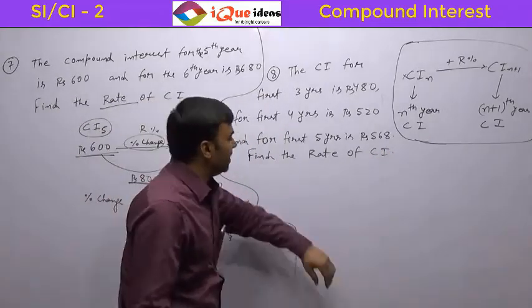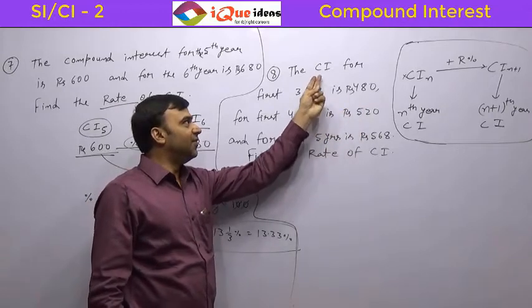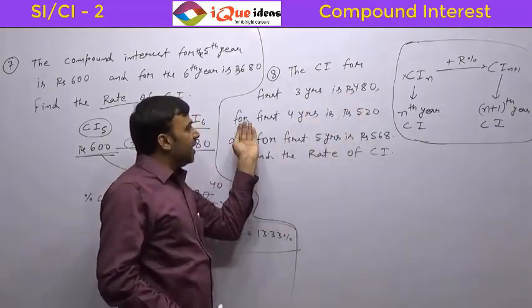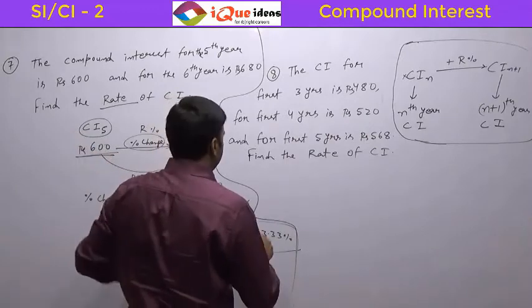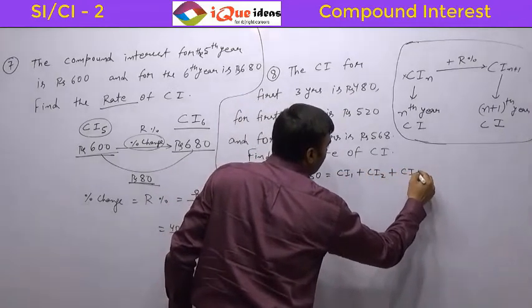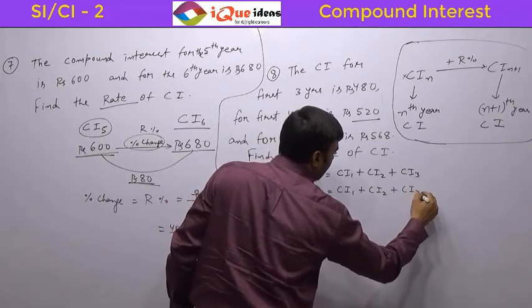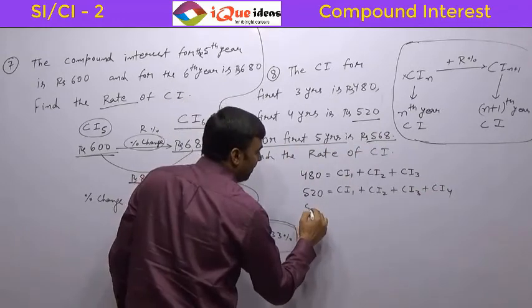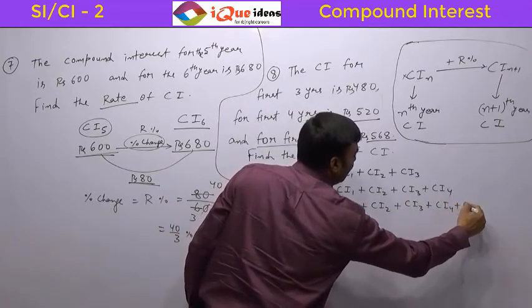Now look at this tricky question. The compound interest for the first three years is Rs. 480 — that is the total interest for the entire first three years. The compound interest for the first four years is Rs. 520, and for the first five years it is Rs. 568. So 480 equals CI1 + CI2 + CI3, and 520 equals CI1 + CI2 + CI3 + CI4, and 568 equals CI1 through CI5.